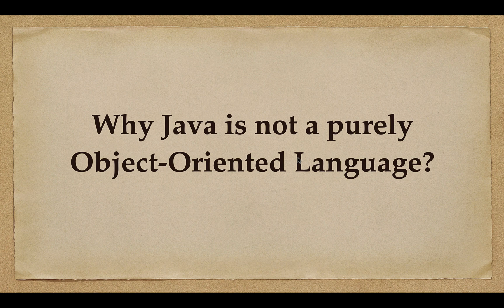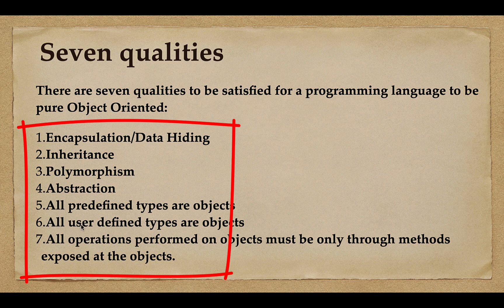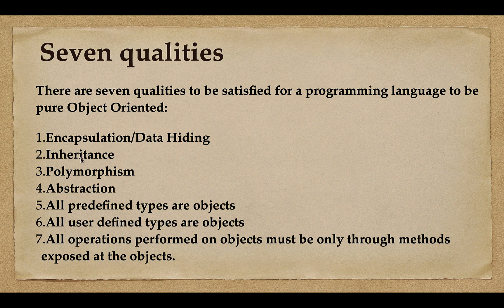Let's understand why Java is not a purely object-oriented programming language. There are seven qualities that a programming language must satisfy to be called purely object-oriented: encapsulation or data hiding, inheritance, polymorphism, abstraction, all predefined data types must be objects, all user-defined types must be objects, and all operations must be performed only through methods exposed by objects.